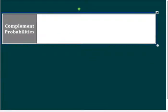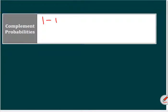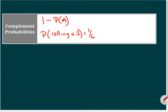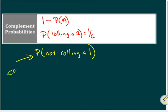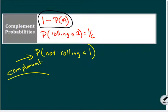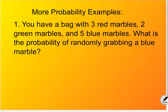Complement probability — complement means the opposite. A complement means one minus the probability of some event happening. So if the probability of rolling a one is one sixth, the complement asks: what's the probability of not rolling a one? Mathematically, you take one minus the probability of that event. Please notice it is not saying something nice — that's not how this 'complement' is spelled.